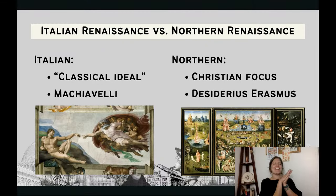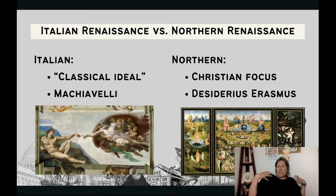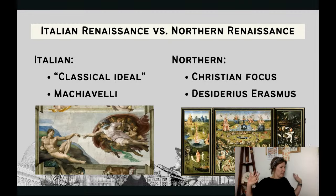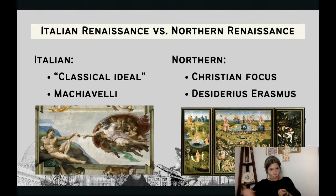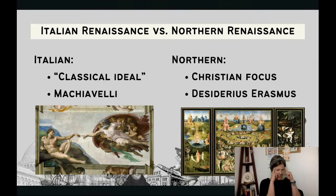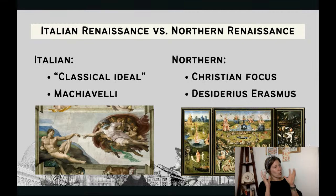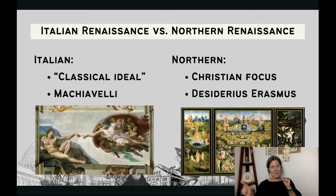The Italian Renaissance focuses on a classical ideal — Italian Renaissance artists became very focused on making muscular, strong figures, with a lot of mythology present, harkening back to Greek and Roman glory. You also need to think about Machiavelli and his book The Prince, which sets the stage for more secular, not religious, more worldly political institutions. He worked a lot with the Medici family in Italy.